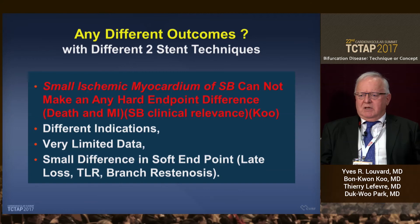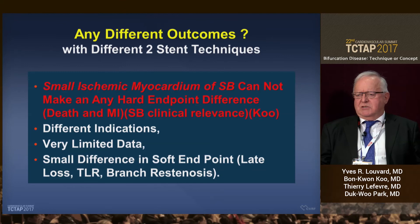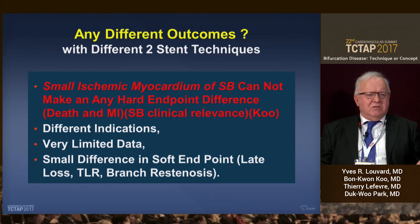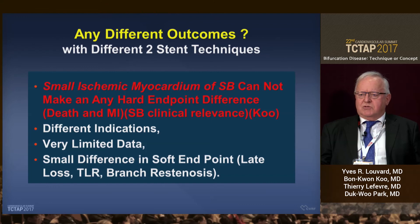I want to introduce a concept developed by Bonkonku, saying that if the trials comparing one versus two stents — especially the first ones on small vessels — are not showing any difference, it is because the side branch was not clinically significant. So treated or not, restenosed or not, doesn't matter because there is no clinical consequence. About different two-stent techniques, we can say that probably they are indicated for different anatomographic indications. We have very limited data, only a few randomized trials, and generally the differences are quite small on soft endpoints like late-loss TLR or branch restenosis.